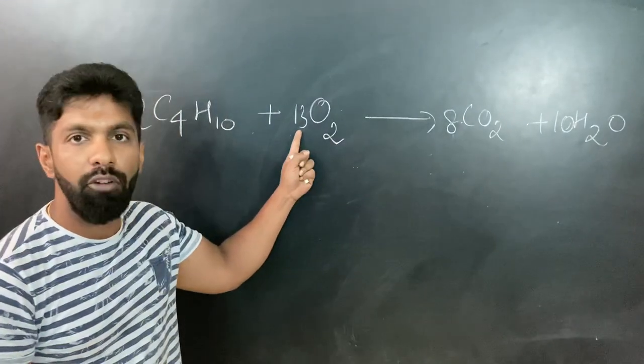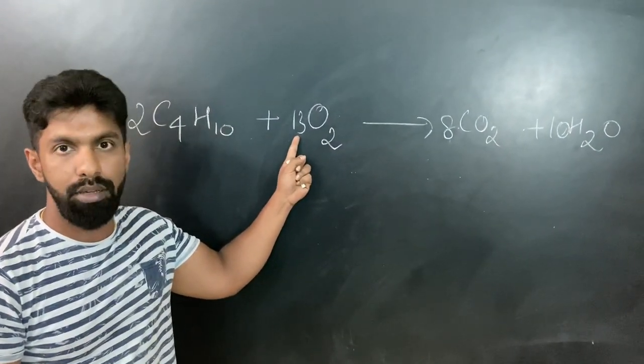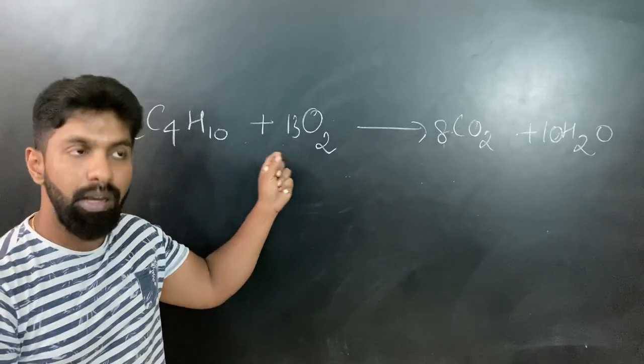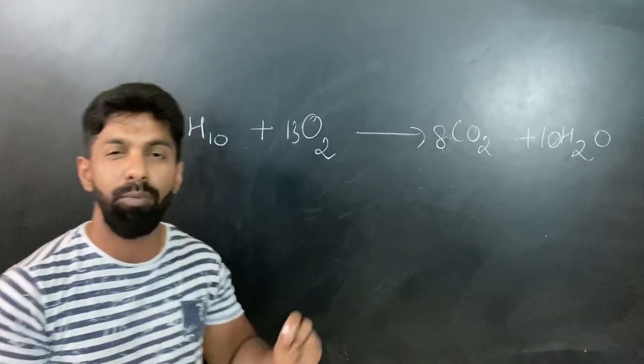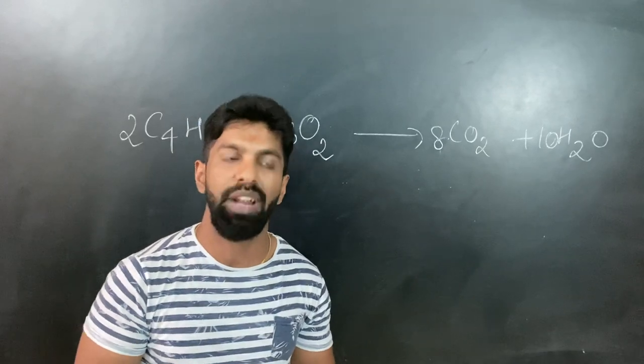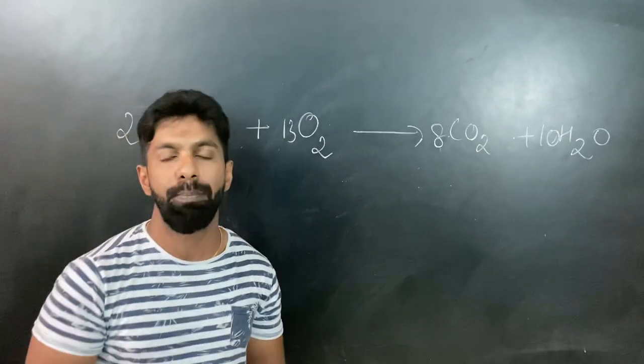Now let me reveal the fact why this kind of equation becomes tough for a student to balance. The main and the only important fact behind this is the presence of such a big odd number here. You can see an odd number present here - a big odd number - and that is the one which is making it difficult for any student to get the correct balancing numbers.